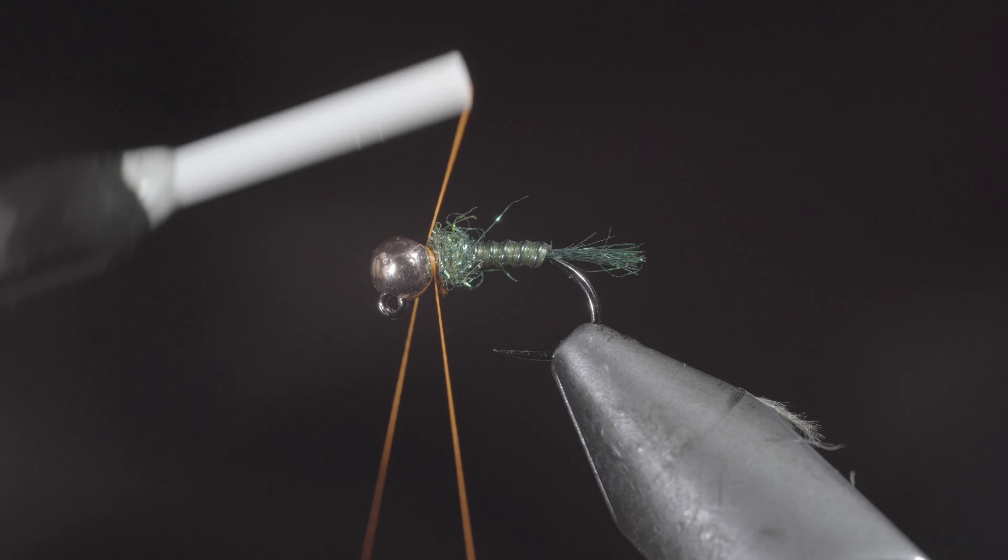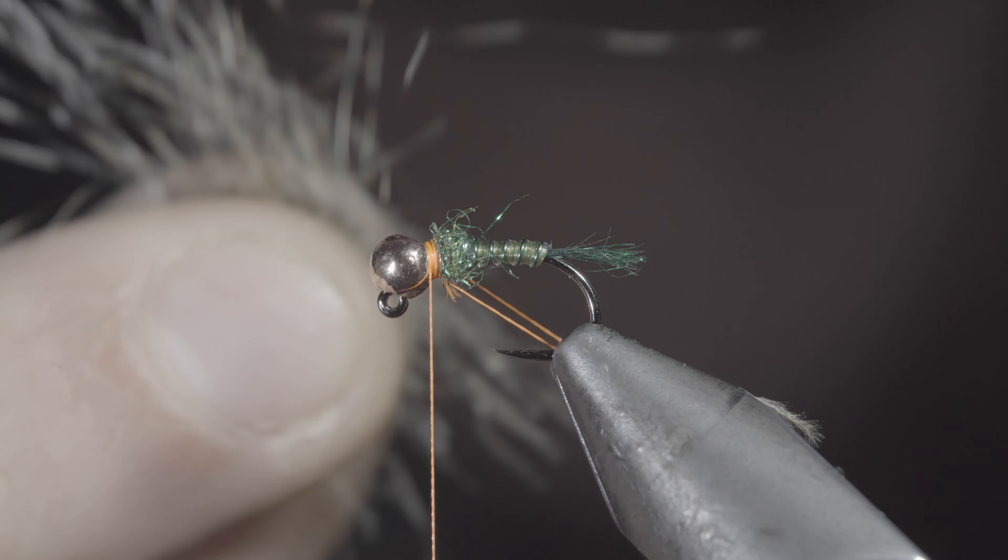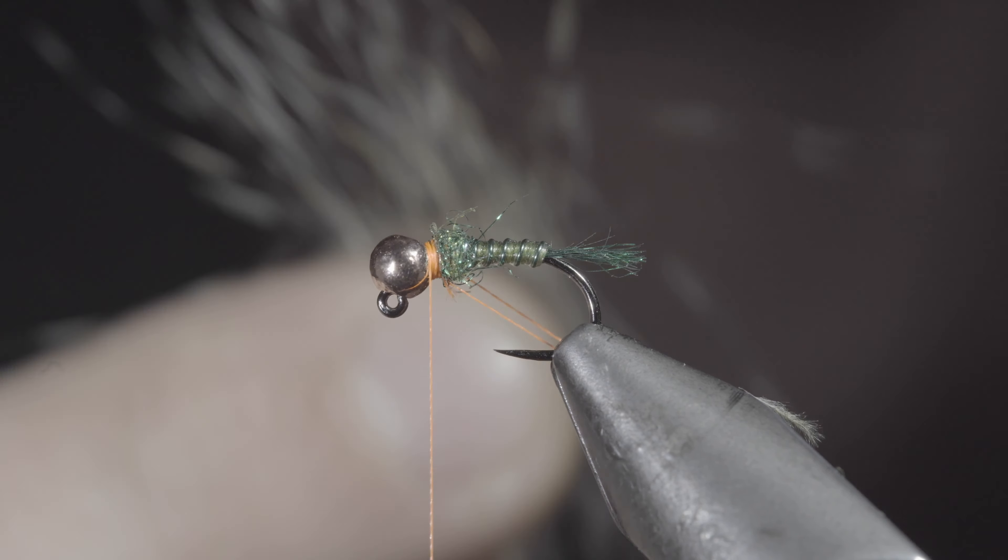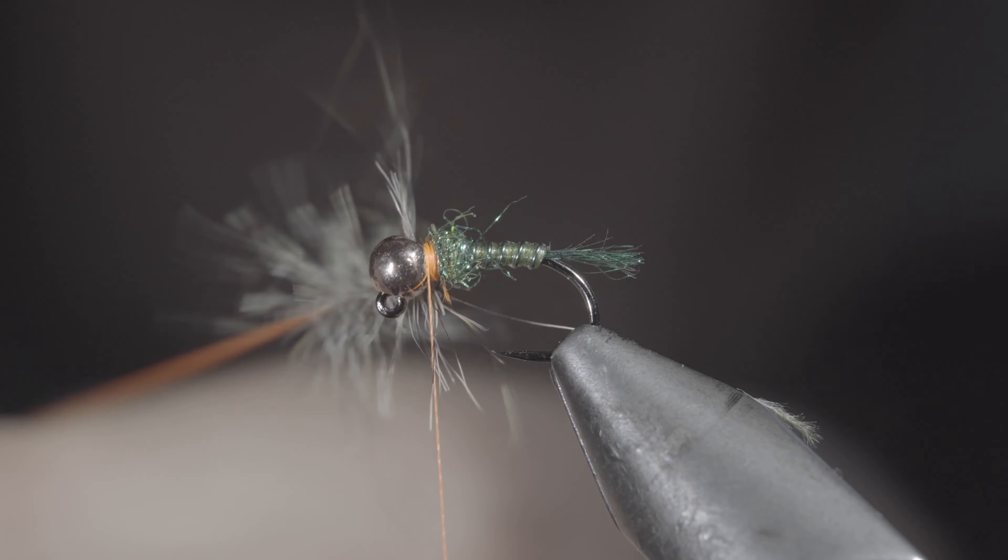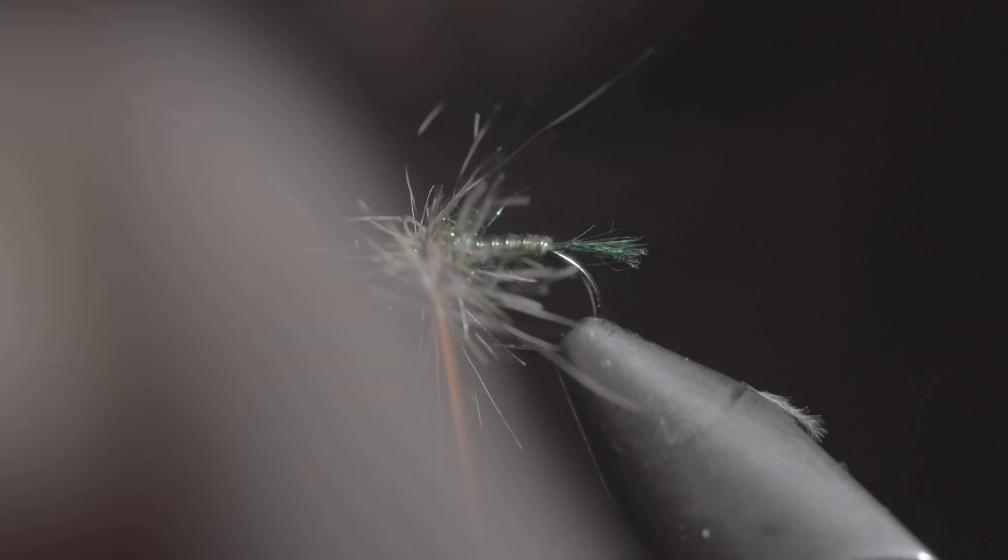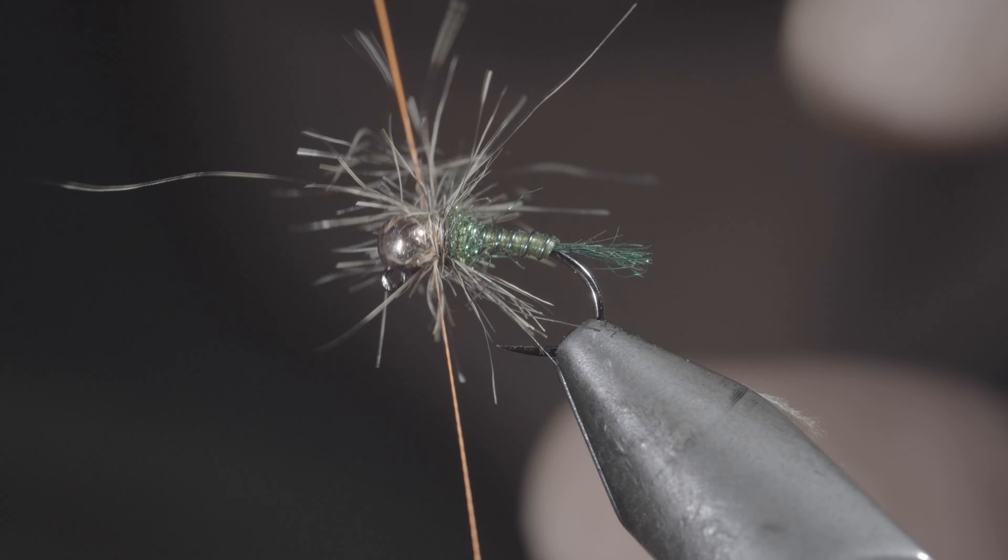Once complete, we'll create a dubbing loop and grab some squirrel dubbing. Insert this into our dubbing loop, spin it up, and begin wrapping it around the head of the fly, brushing the fibers backwards as you go.